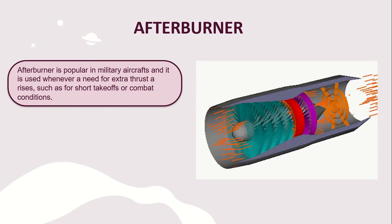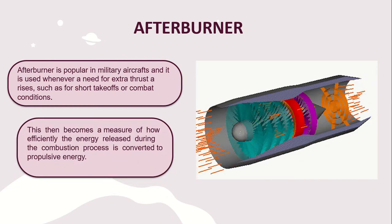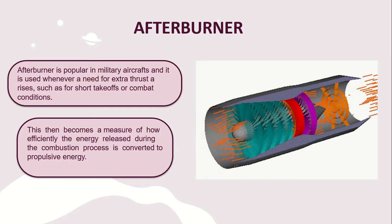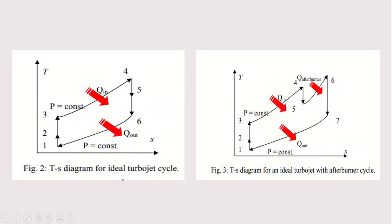The afterburner is popular in military aircraft and is used whenever a need for extra thrust arises, such as for short take-off or combat conditions. This is the schematic diagram for a turbojet engine with afterburner — you can see the diffuser, compressor, burner, turbine, and the afterburner region before the nozzle. This is the T-S diagram for the ideal turbojet cycle, and this is the diagram for the ideal turbojet cycle with afterburner. You can see the difference from step 5 to 6, where the temperature rises.